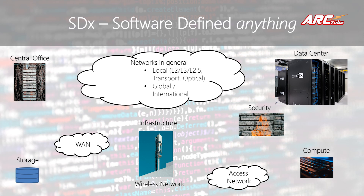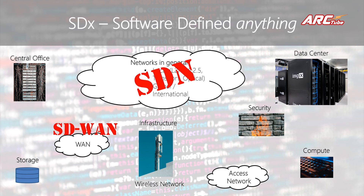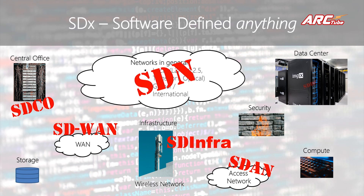You can software-define any of these things, whether it is a network, infrastructure, system, data center, or anything. When you use software rather than the conventional way of using hardware, you abstract the capabilities in hardware to a software layer and use software in your day-to-day operations. When you software-define the network, you call it software defined networking, or SDN. When you software-define your wide area network, you call it software defined WAN or SD-WAN. Similarly, you have software defined access network, software defined central office, software defined infrastructure or SD-infra, software defined data centers, software defined compute, and software defined storage.